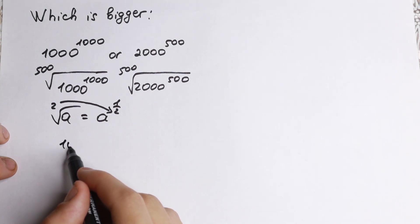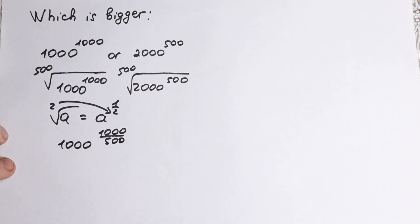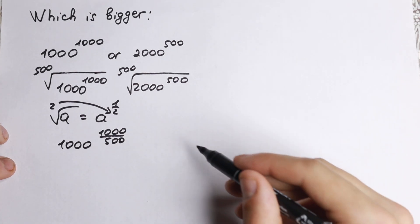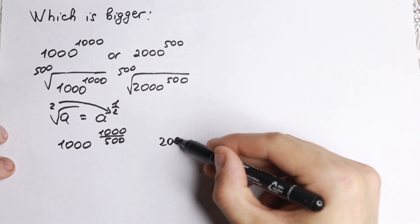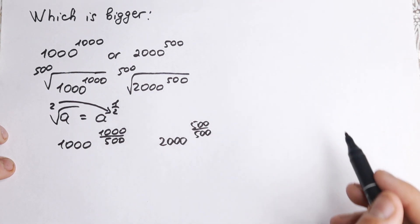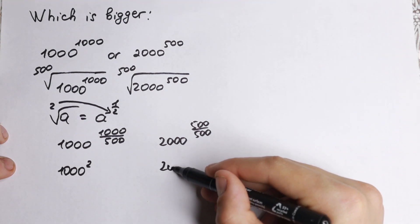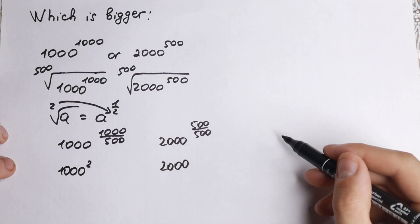So we can write it as 1000 to the power 1000 over 500, and on the right hand side we have the same situation: 2000 to the power 500 over 500. Let's divide it because it's not hard to divide this. On the left we have 1000 squared, and right here we have only our 2000.